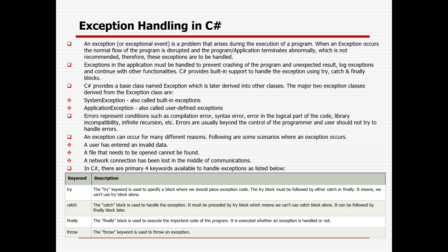C# provides a base class named Exception which is derived into other classes. The two major exception classes derived from the Exception class are SystemException, also called built-in exception, and ApplicationException, which is also called user-defined exception.